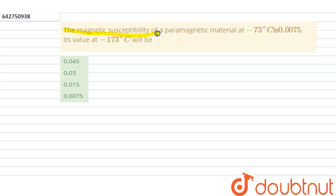magnetic susceptibility of a paramagnetic material at minus 73 degrees Celsius is 0.0075. Its value at minus 173 degrees Celsius will be. So we have given four options. The solution for this is